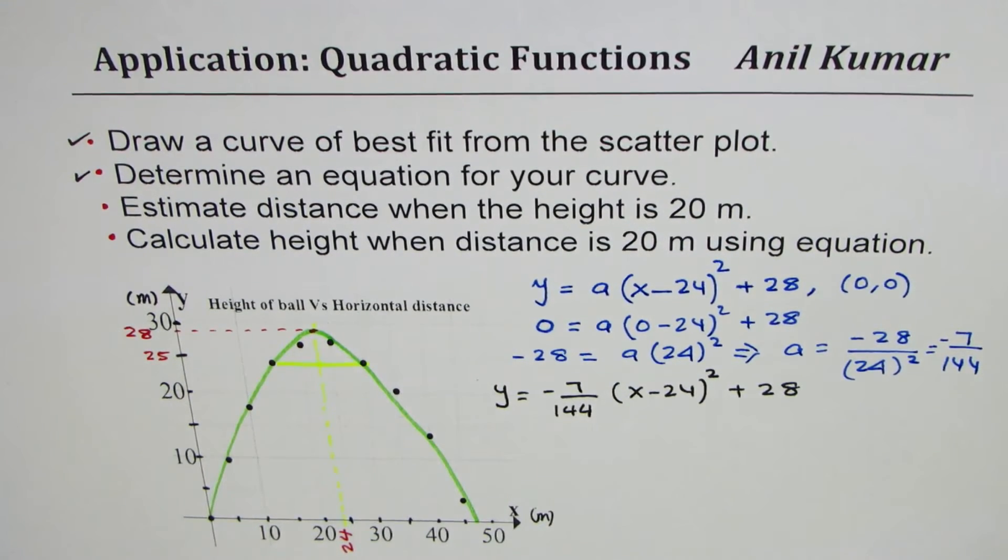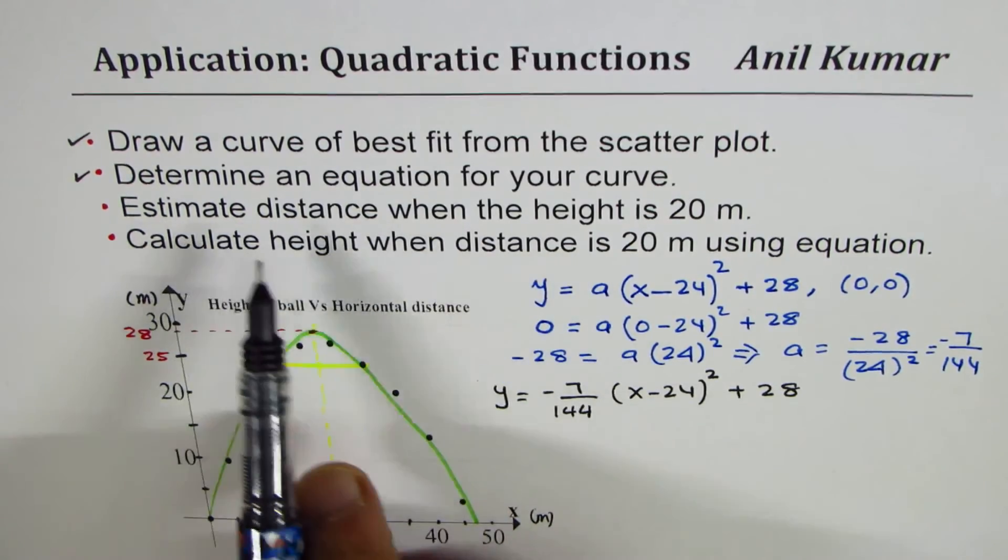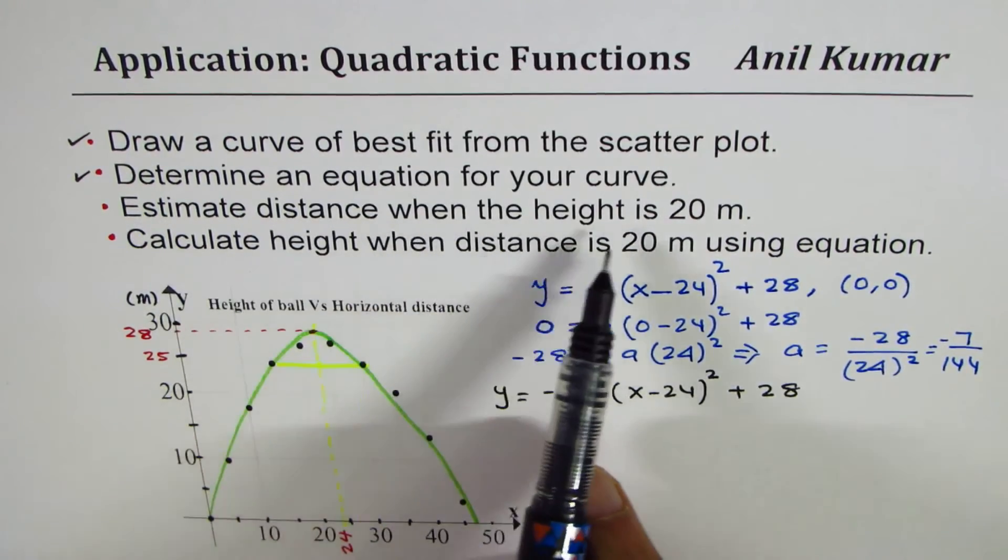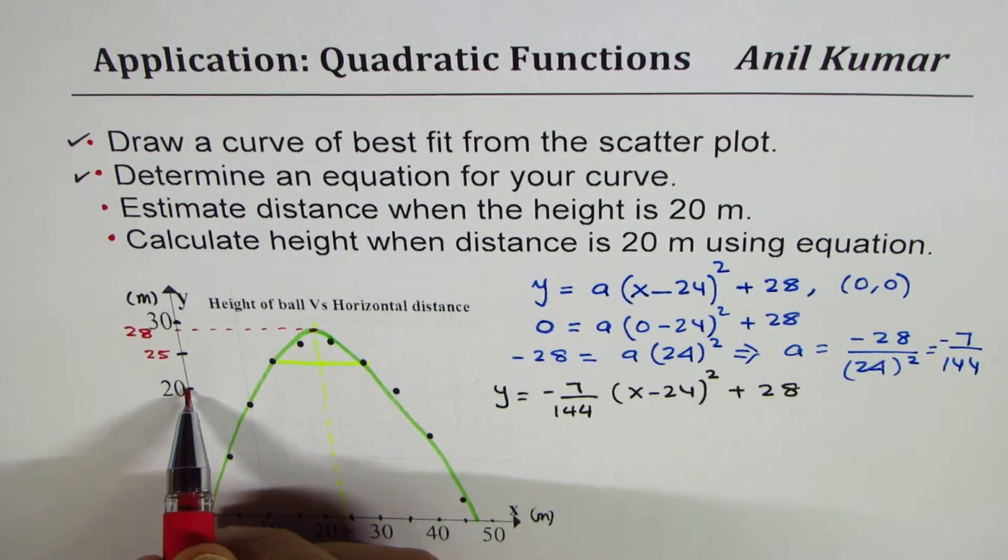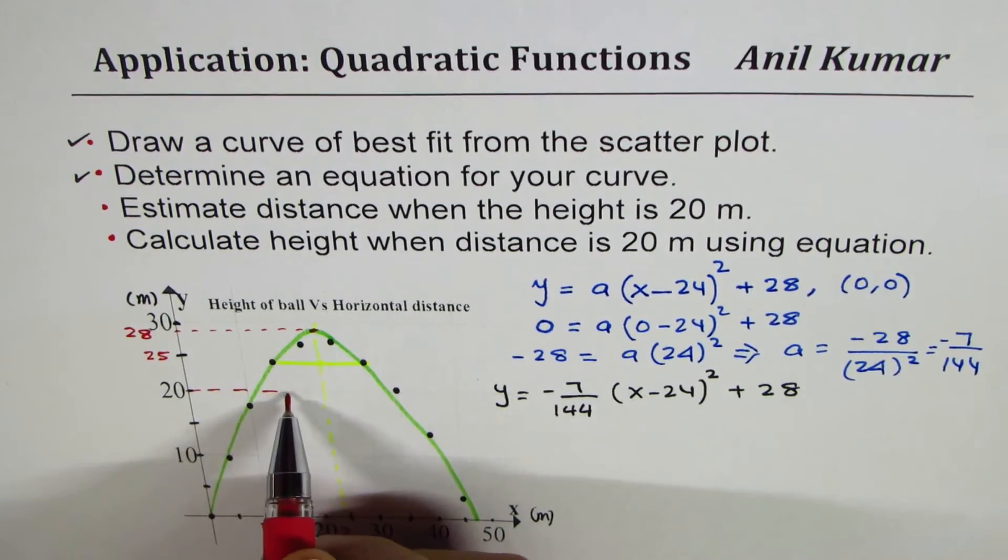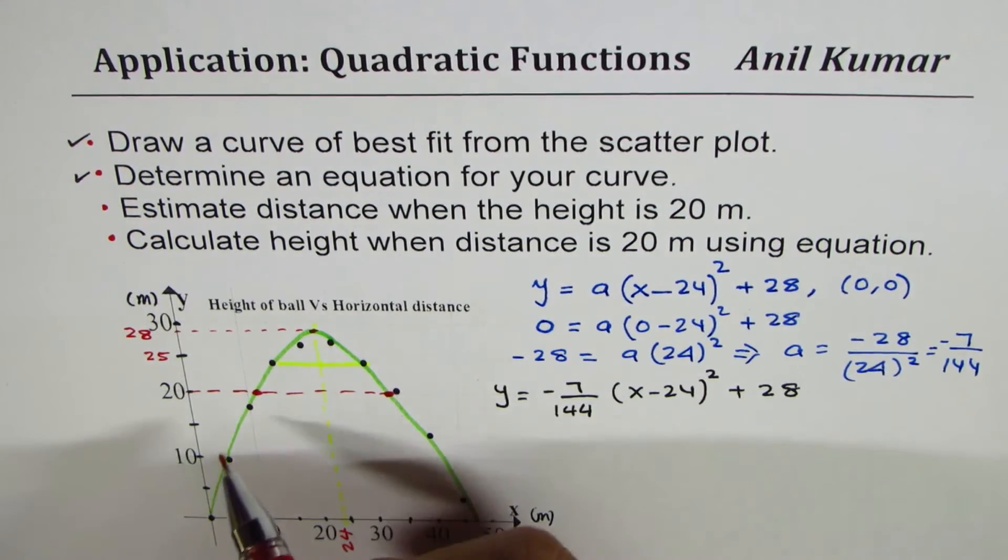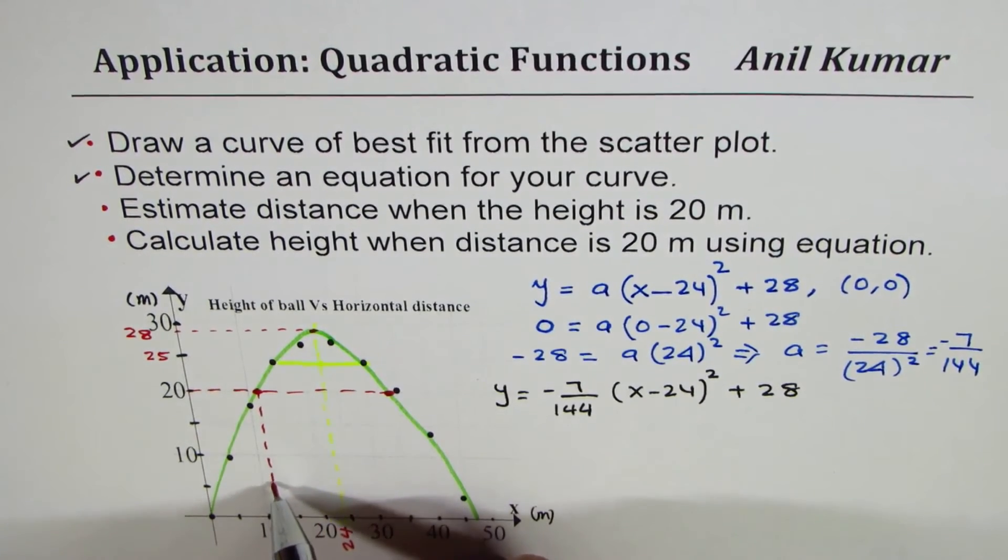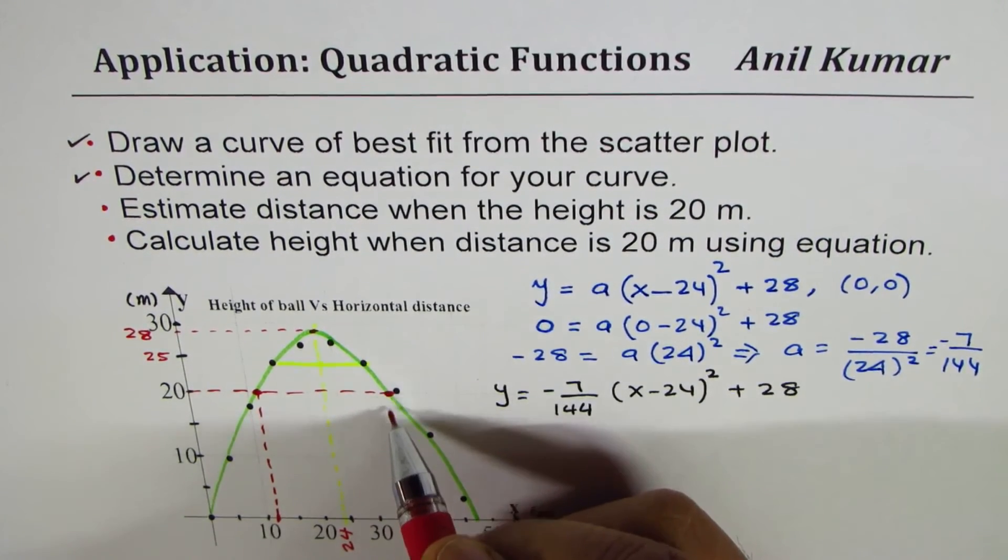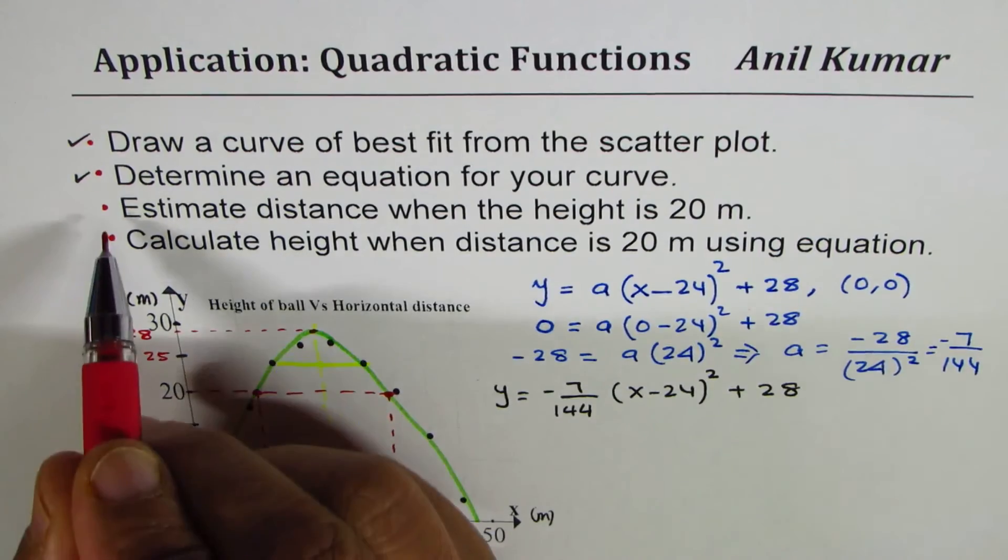Third part of this is: estimate distance when the height is 20 meters. When height is 20 meters you can draw a horizontal line like this - it crosses at two points. Now to get the distance we have to read the distance on the x-axis. So that becomes one point and then the other one here will be somewhere here.